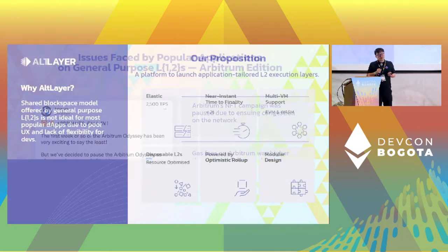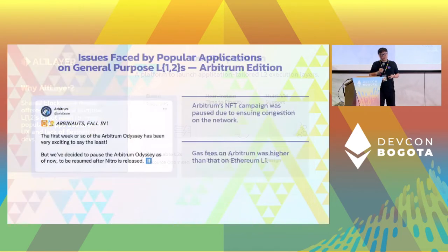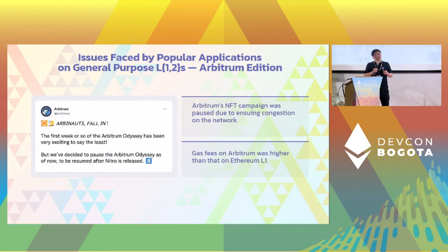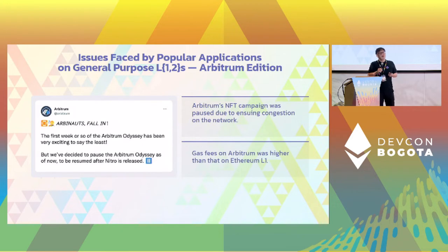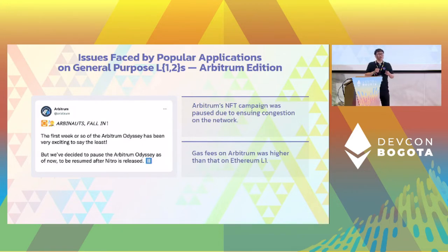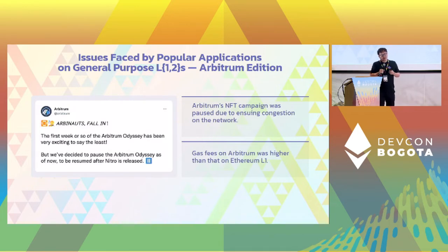Same issue with Arbitrum. Basically they had a very successful campaign to onboard more users, but it was just so popular and the network was so congested that they had to pause until the Arbitrum Nitro came out so they could resume the campaign.